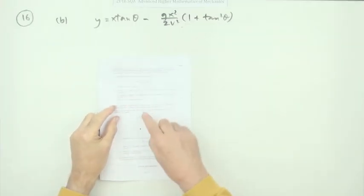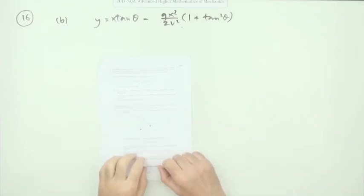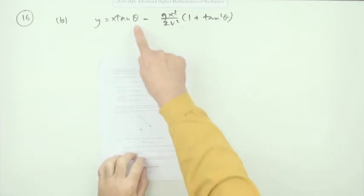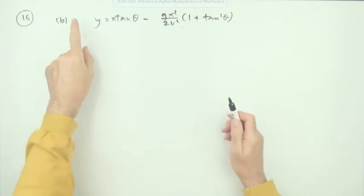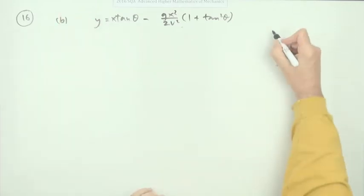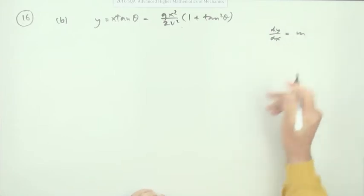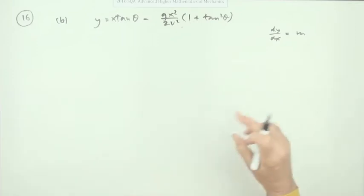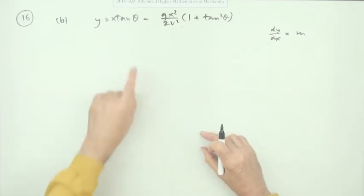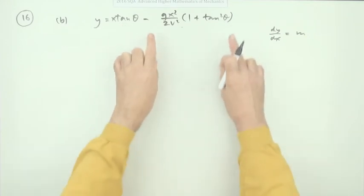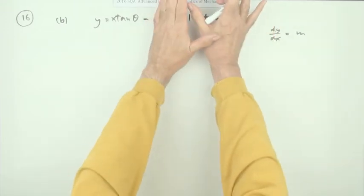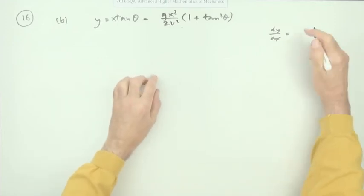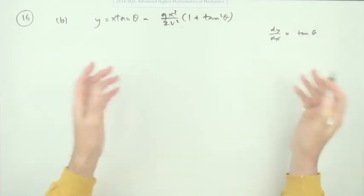Part b gives you two positions of this ball and asks for the angle of projection for five marks. There's no point in differentiating to get dy by dx because you'll end up with tan theta, no mention of x. This term will still have an x, and when you make x equals zero that term disappears and you're left with dy by dx equals tan theta which you knew anyway.